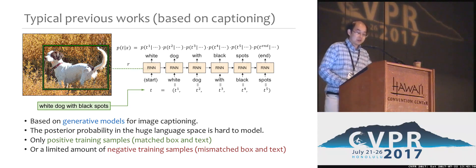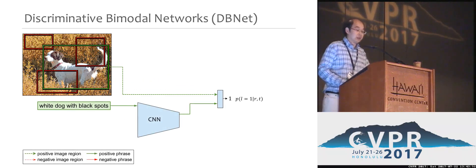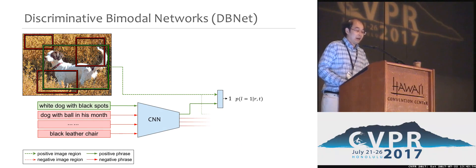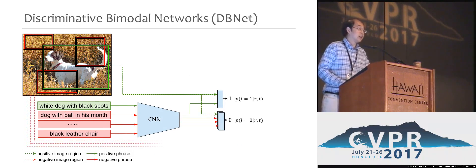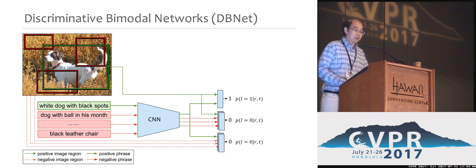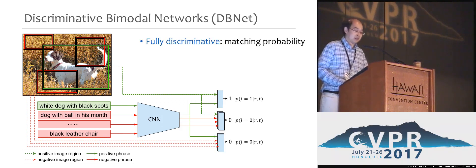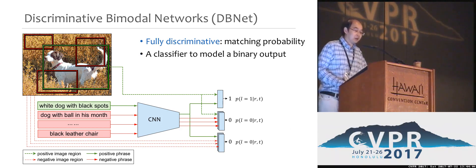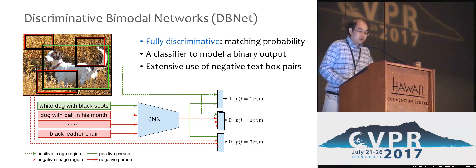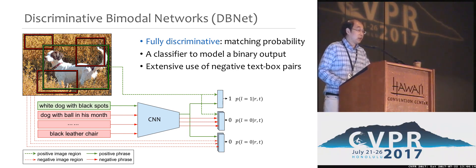In contrast, we approach the detection problem in a fully discriminative way. By taking both the image region and the text phrase as an input condition and estimating the probability of their matching each other, the matching probability can be easily modeled with a binary classifier, which allows the extensive use of all possible negative text-box pairs during training. We call the model Discriminative Bimodal Network, or DBNET.